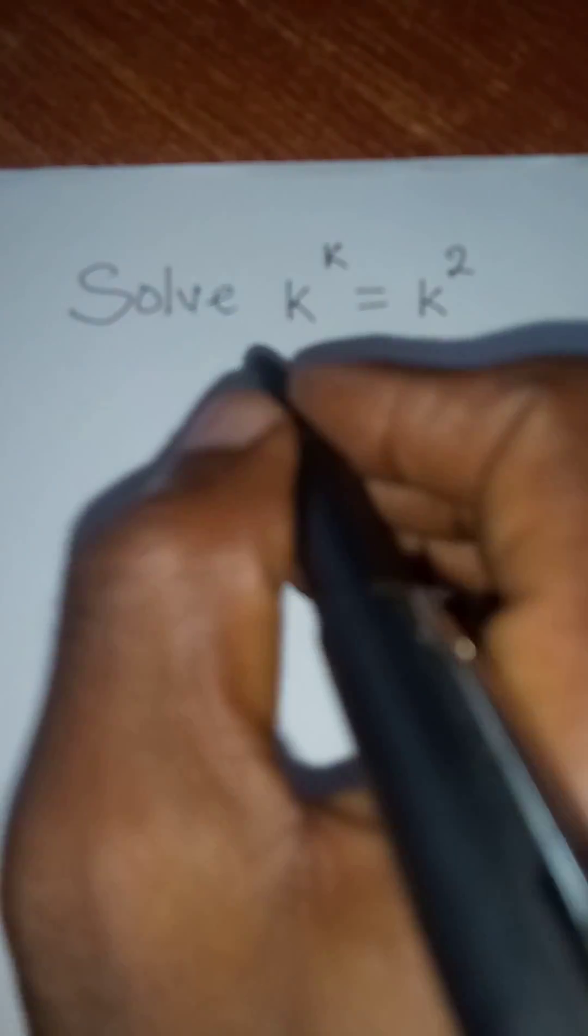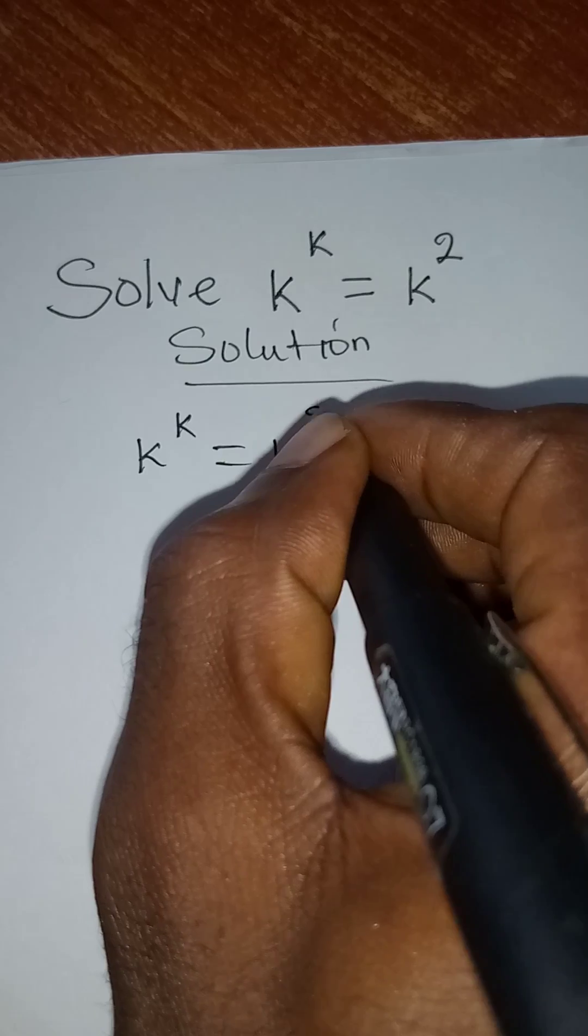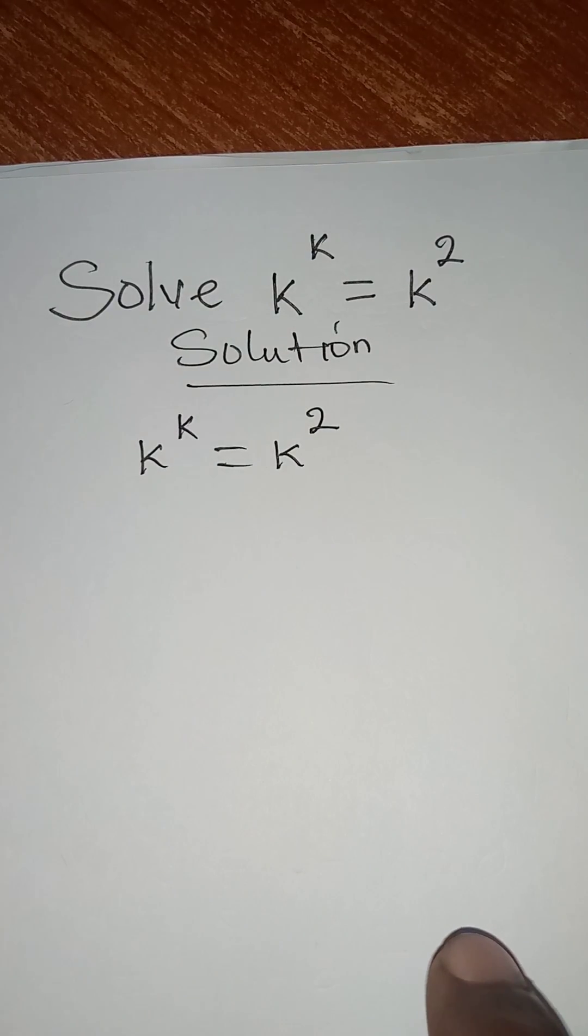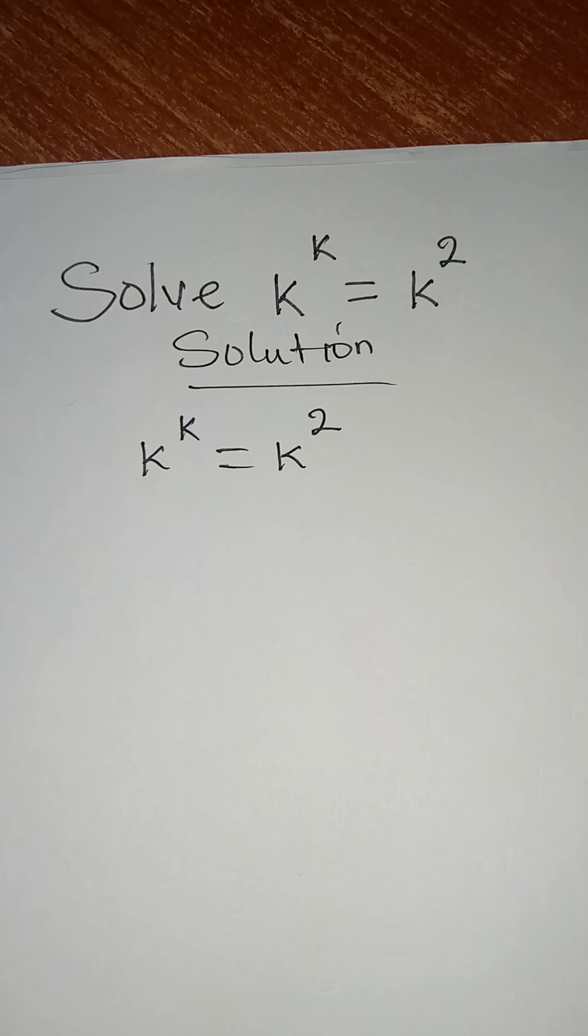Hi everyone, let's solve this problem very quickly. We have k to the power of k equals k to the power of 2. I'm going to solve this problem without taking the log of both sides.